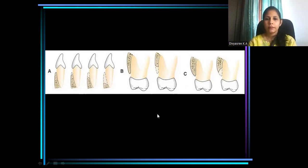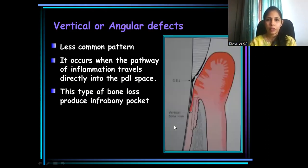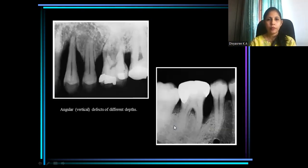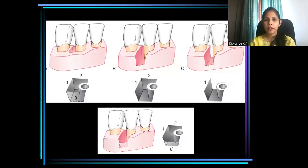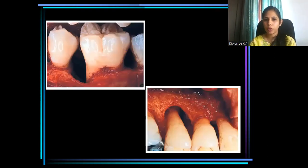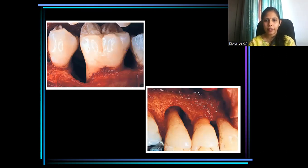Vertical defects or angular defects are more commonly seen in posteriors where there is abundant cancellous bone. A vertical or angular bony defect can be one wall, two wall, or three wall. This is a three-wall vertical defect, also called a circumferential bony defect.